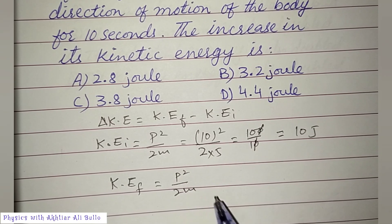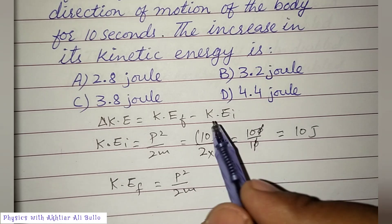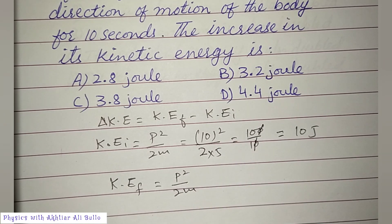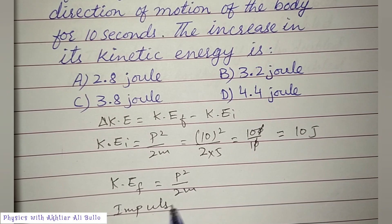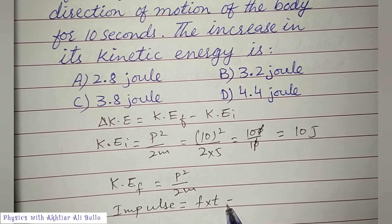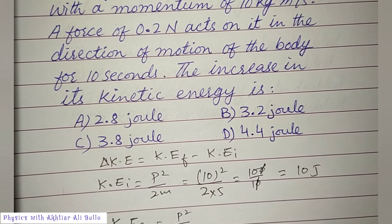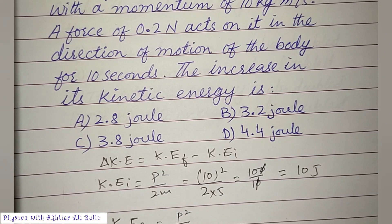Now we will find the final kinetic energy, which equals P² upon 2M. The final linear momentum is not yet known, so first we will calculate it. As we know, impulse equals force into time. Force is 0.2 N and time is 10 seconds, so impulse is obtained as 2 N·s.